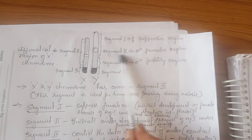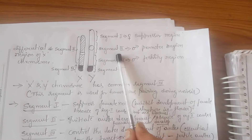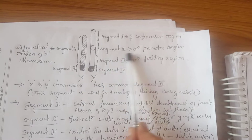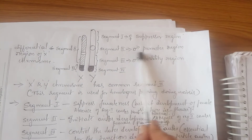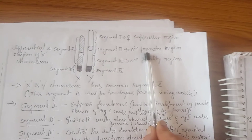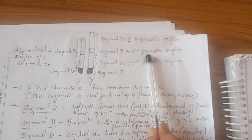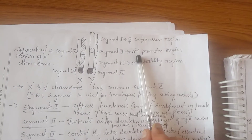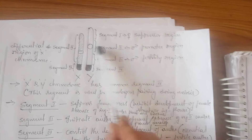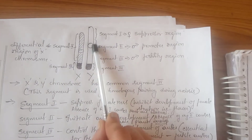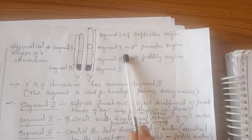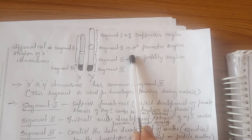Segment 2, or region 2, initiates anther development. If this region is present, it promotes or initiates anther development in the flower. Absence of this region means a female plant is produced.